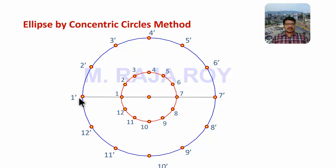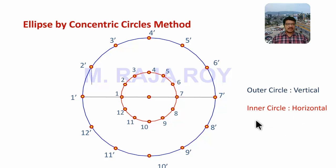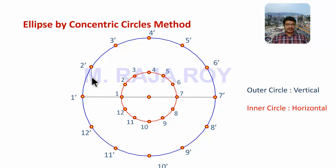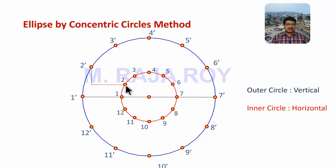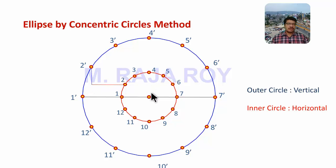From the outer circle you have to draw vertical lines, and from the inner circle you have to draw horizontal lines. Starting from point 2 dash on the outer circle, draw a vertical line towards the inside of the circle. Then from point 2 on the inner circle, draw a horizontal line outwards so it intersects with the vertical line. That intersection point is P2.